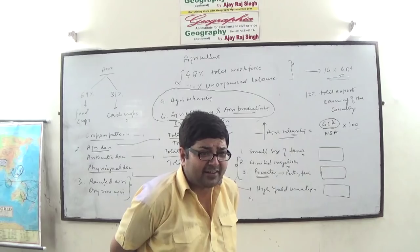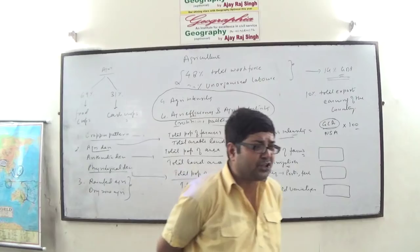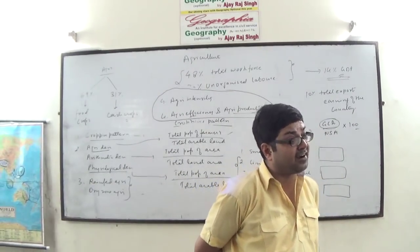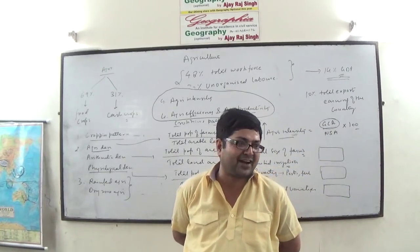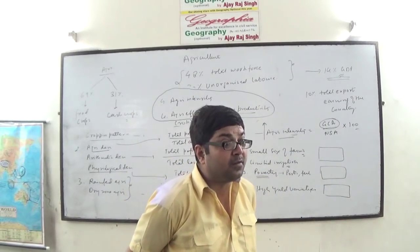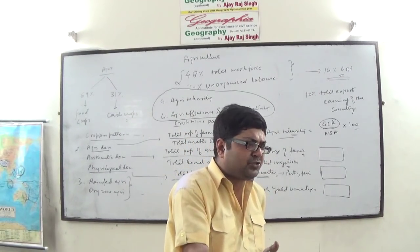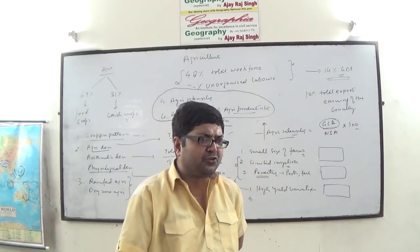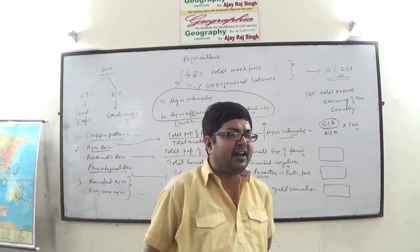In India, value addition in agriculture is totally lacking. There is a tendency among farmers and traders to sell off agricultural produce in raw form. The same potatoes are sold to Uncle Chips, which sells them at 100 times more money. The same mangoes are sold, and mango pulp is extracted and sold back to India at 100% more benefit. Same with wheat and flour — huge difference in cost. We lack value addition in agriculture.